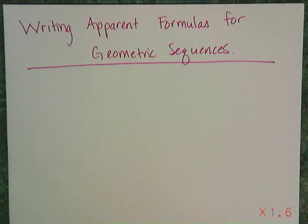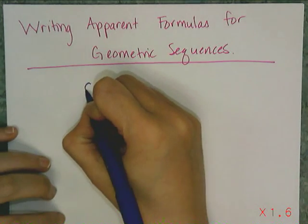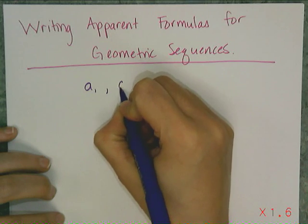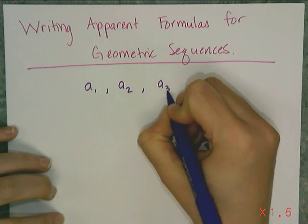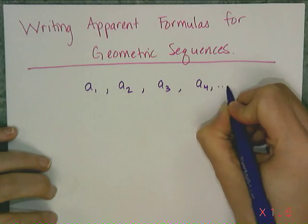In this lesson, we're going to figure out how to write apparent formulas for geometric sequences. Now, in order to write an apparent formula, you kind of have to know what an apparent formula is. If I look at the general sequence a sub 1, a sub 2, a sub 3, a sub 4, dot dot dot...